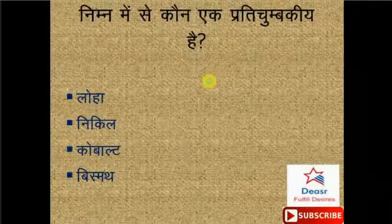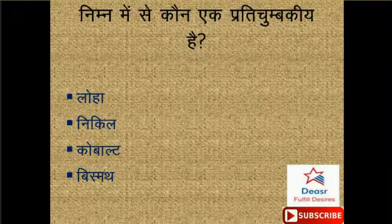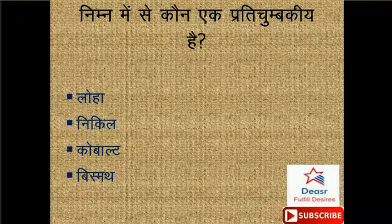Nimn mein se kaunsa ek paramagnetik/diamagnetic padarth hai? Options hain hamare paas: loha, nickel, cobalt, bismuth. Toh iska sahih jawab hai option number D - bismuth.